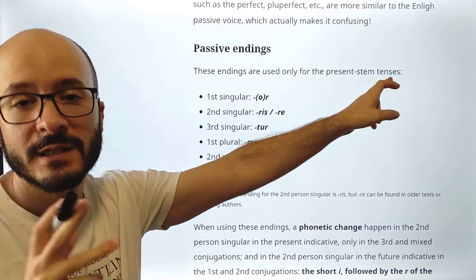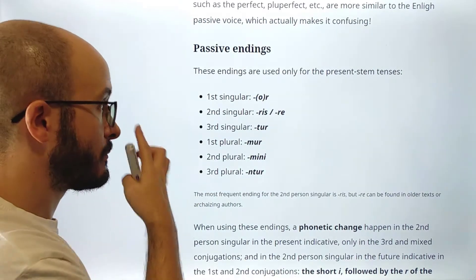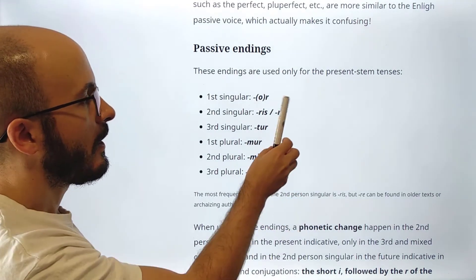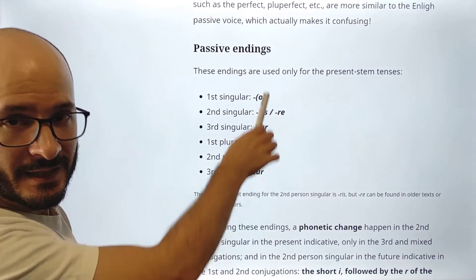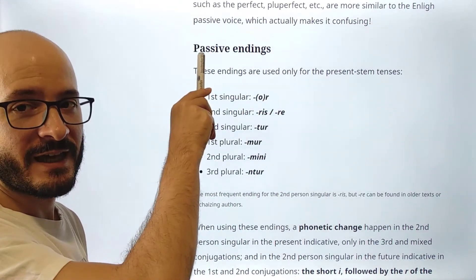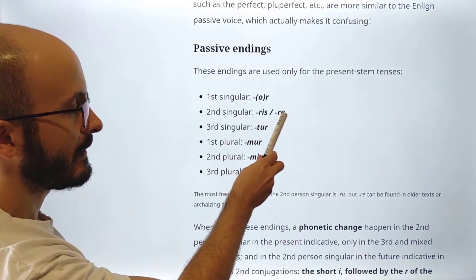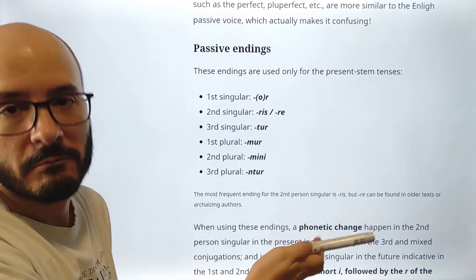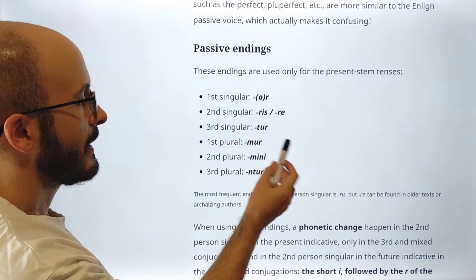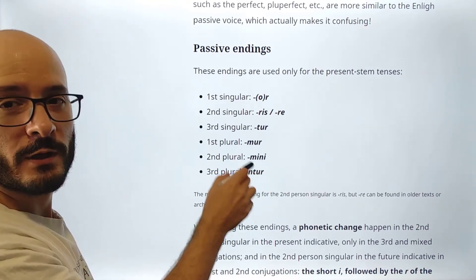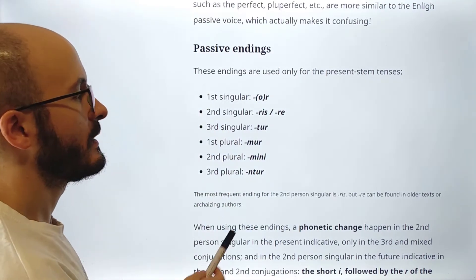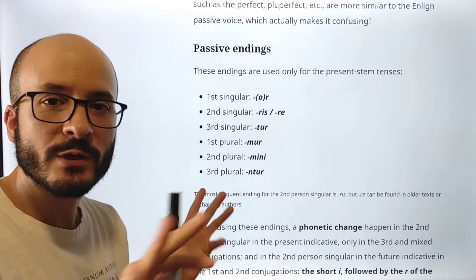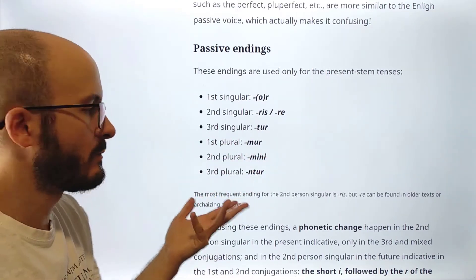These passive endings are used only for the present stem tenses — present, imperfect, future, etc. There's nothing difficult here. Some of the endings are quite similar to the active endings, which is good. Notice that there are two endings for the second person singular: 'ris' appears most of the time, but you can also find 're'. Then: 'tur', 'mur', 'mini'. This ending 'mini' is quite weird — it doesn't look like anything we might know from before. Even linguists don't know where it comes from. The most frequent ending for the second person singular is 'ris', but 're' can be found in older texts or archaizing authors.